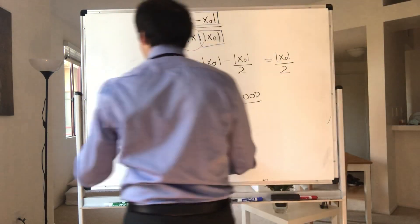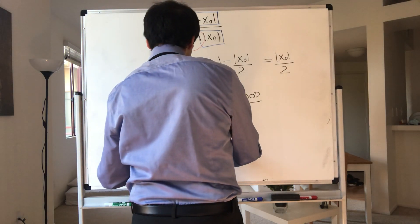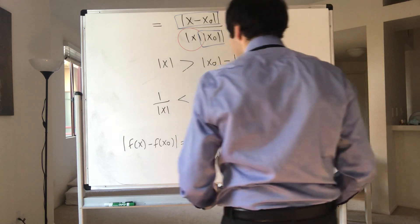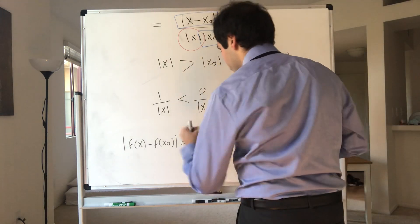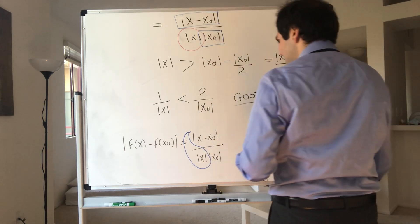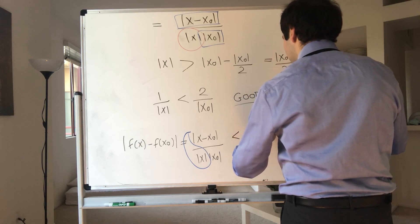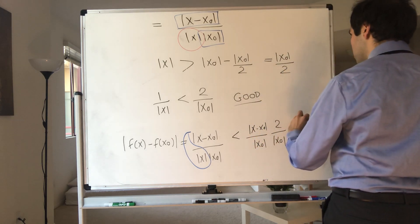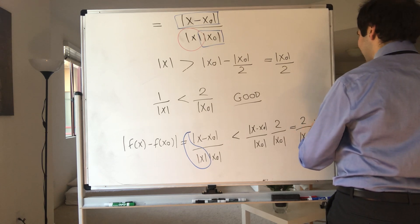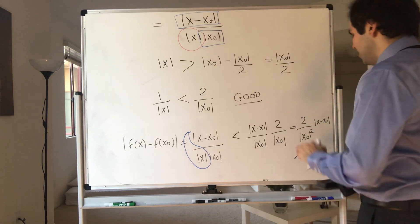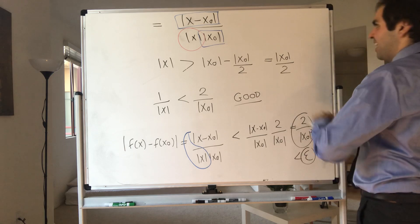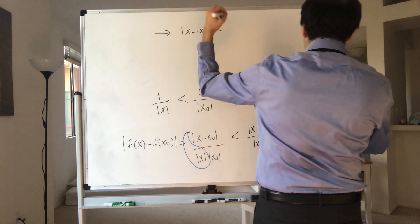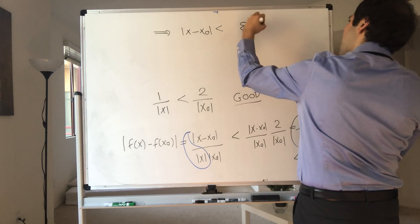Because now, let's go back to our f(x) minus f(x naught). So that is x minus x naught over x times x naught. But then that's just 1 over x times this other chunk. So this becomes less than 2 over x naught squared times x minus x naught. And now, we let that be less than epsilon, which finally gives x minus x naught is less than epsilon x naught squared over 2.